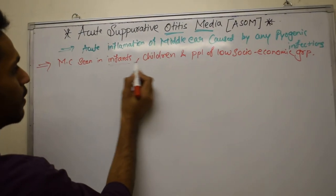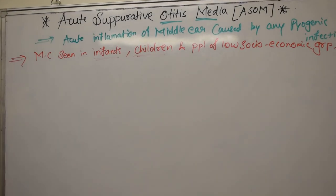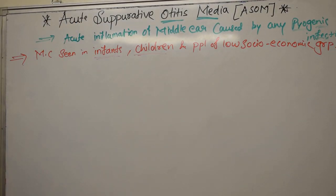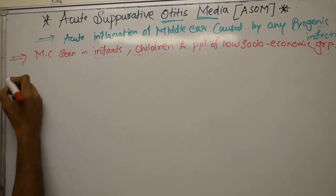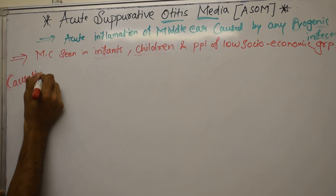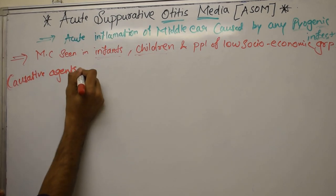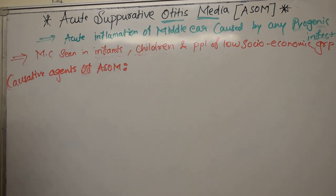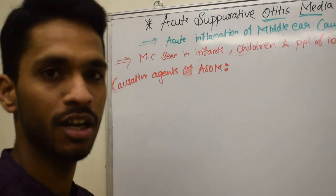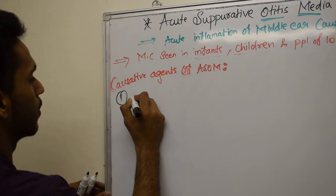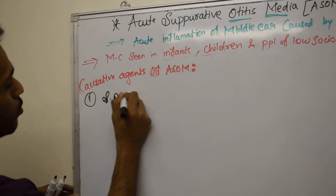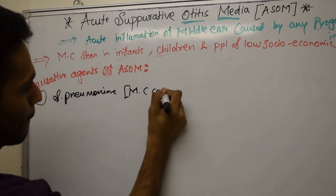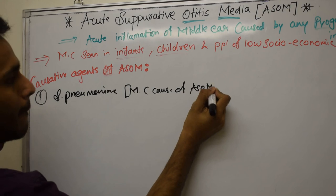Why is ASOM seen most commonly in infants and children? We will discuss it as we continue. The causative agents — any pyogenic infections cause ASOM. The causative agents include some bacteria and some viruses. First, Streptococcus pneumoniae, which is the most common cause of ASOM in children.